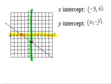So now we know the x-intercept and the y-intercept. But it is also important to note that at the x-intercept, y will always be 0. And at the y-intercept, x will always be 0.